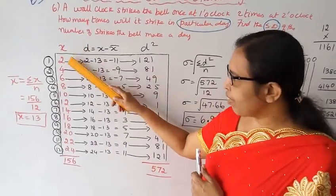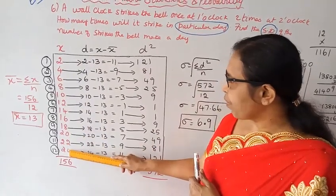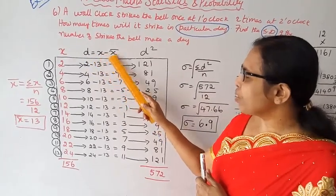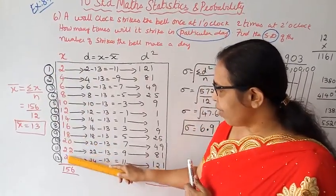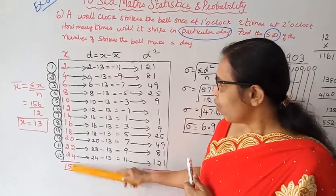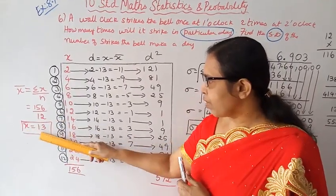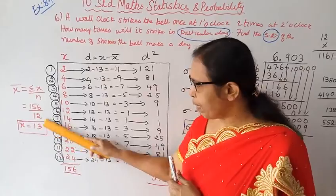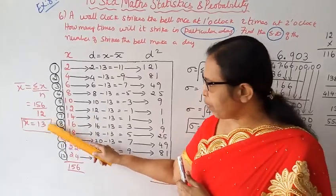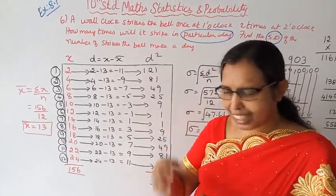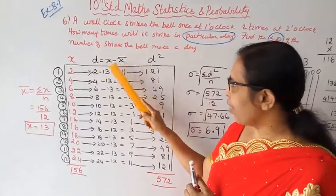The X values are 2, 4, 6, 8, 10, 12, 14, 16, 18, 20, 22, 24. Now we find d = X minus X-bar. The sum of X is 156. X-bar equals 156 divided by n, that is 156 divided by 12. X-bar equals 13.